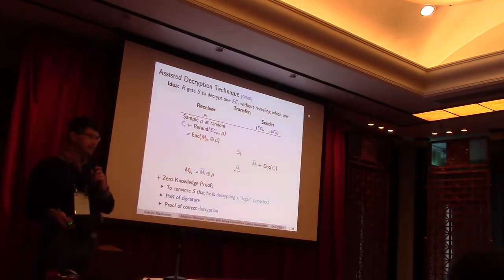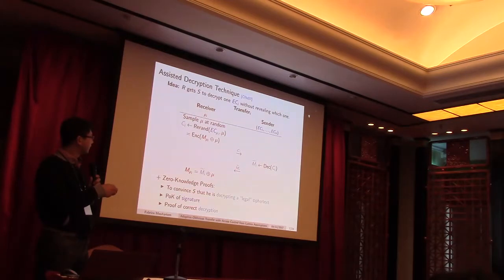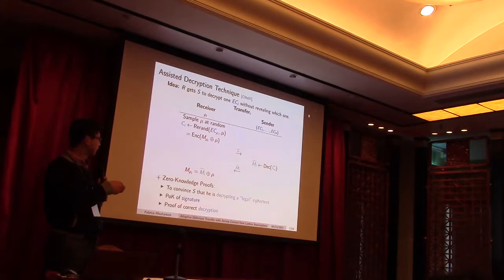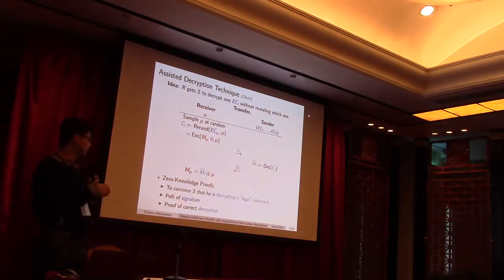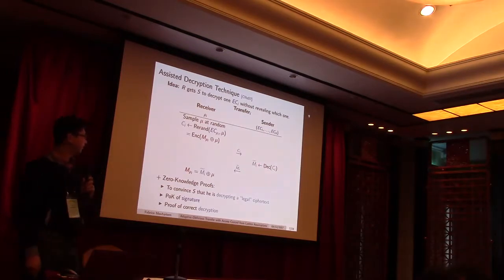And then, once the sender decrypts it, it obtains only the one-time pad version. So, with the mask, it can guess which message it is, and then the receiver can remove the mask and obtain the message it wants. So, on top of it, we also need zero-knowledge proof to make it secure. We need to, first of all, prove that the sender decrypts a valid ciphertext. We need that the receiver will prove to the sender that this is indeed a randomization of the correct message in the database.